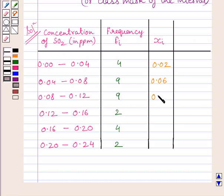Here, it is equal to 0.10. For this interval, class mark is equal to 0.14. For this interval, midpoint of this interval is equal to 0.18. And midpoint of this interval is equal to 0.22.